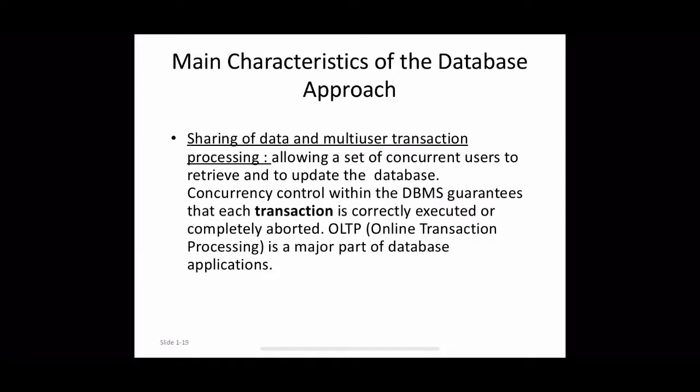To support multi-user access, the DBMS must enforce several transaction properties like isolation and atomicity. The isolation property ensures that each transaction appears to execute in isolation from other transactions even though hundreds may be executing concurrently. The atomicity property ensures that either all database operations in a transaction are executed or none are executed.